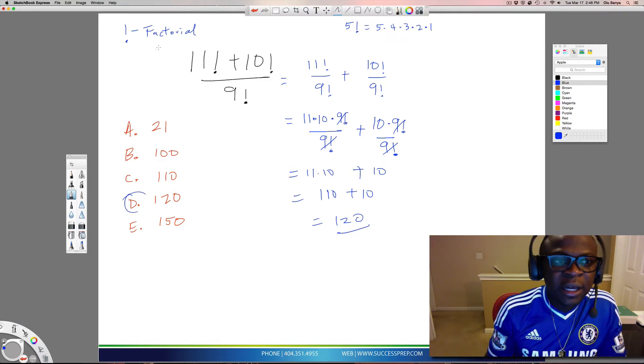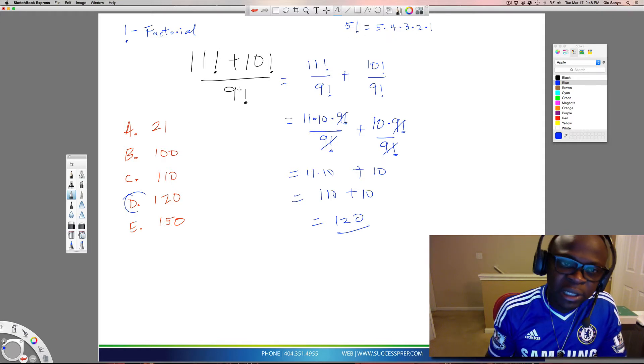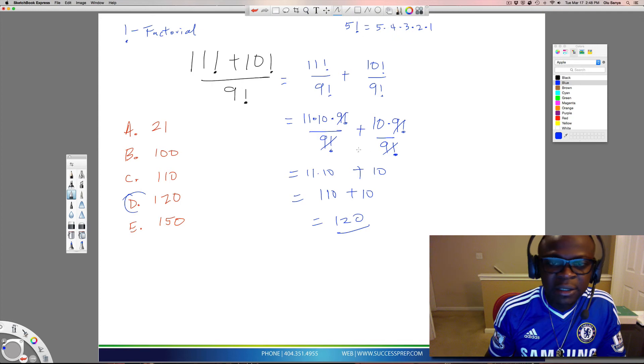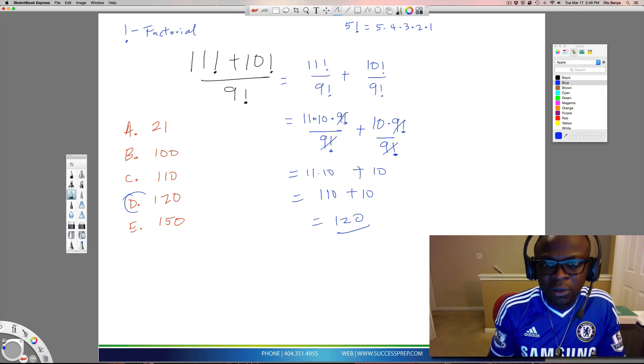The key here is understanding factorial—that you're just multiplying down. But the big math idea is splitting this 9 factorial under the 11 factorial and the 10 factorial. That makes the math easier. Multiply down until you hit the highest term at the bottom. So you say 11, 10, all the way to 9 because there's 9 here. If this was 7, you'd go down to 7 factorial and then cancel. Go to the highest one you can find at the bottom, cross that out, and then multiply the rest, which is just 11 times 10.